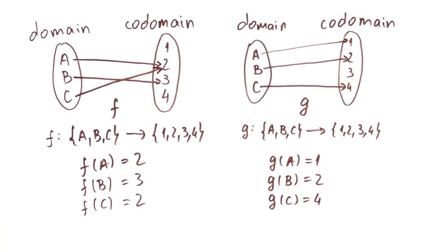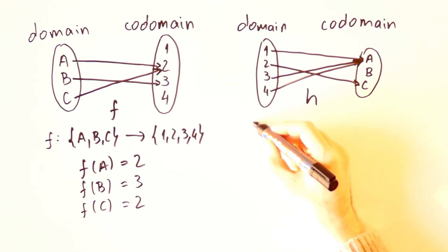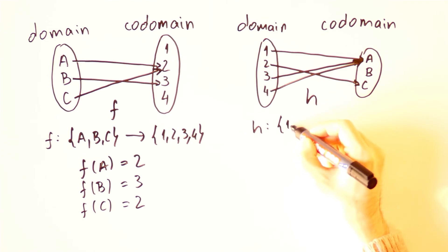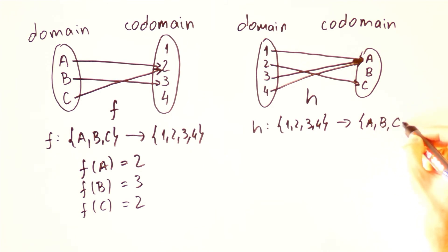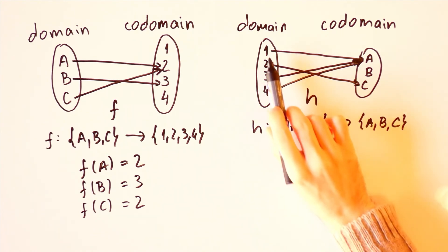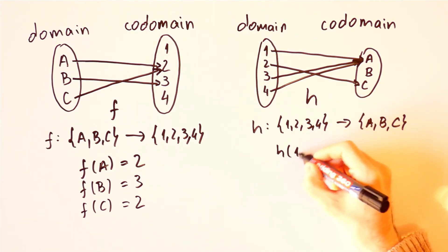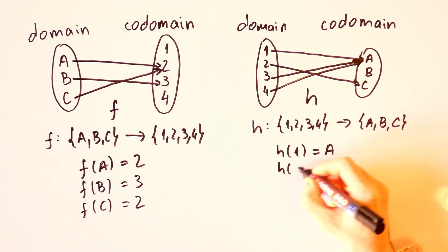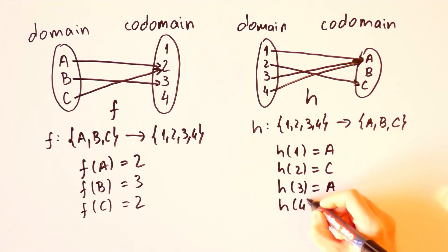We can even have the same sets with reversed roles. Here is an example of that. If we call this function h, then h is a function from the set of 1, 2, 3 and 4 to the set of A, B and C. And since h is a function, it associates to each element of its domain exactly one element of its codomain. In this case, h of 1 is equal to A, h of 2 is equal to C, h of 3 is equal to A, and h of 4 is equal to A.